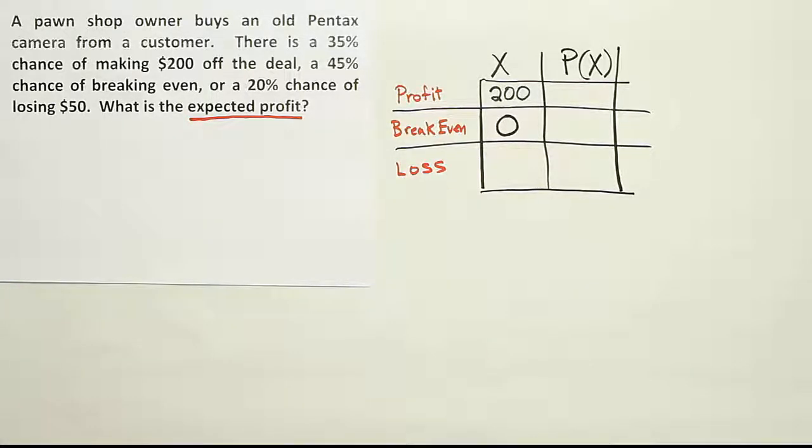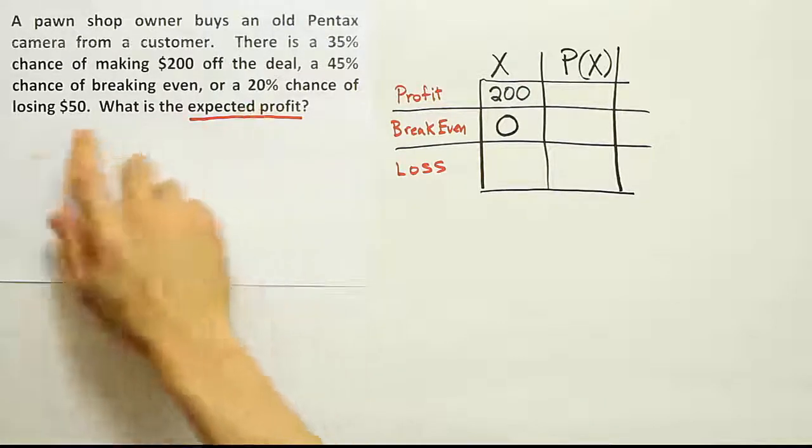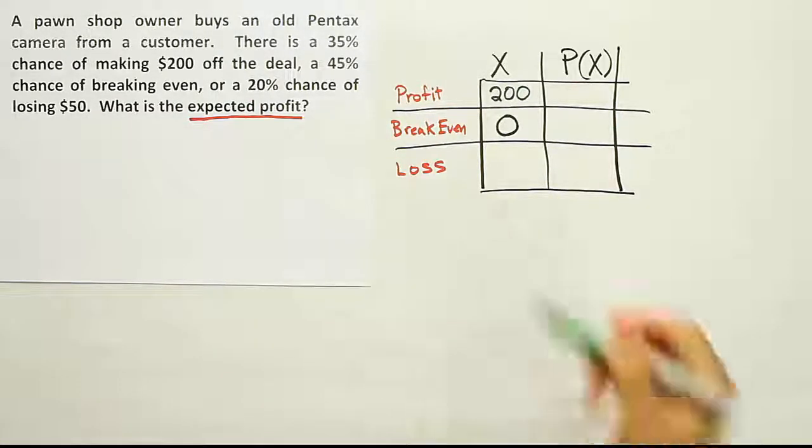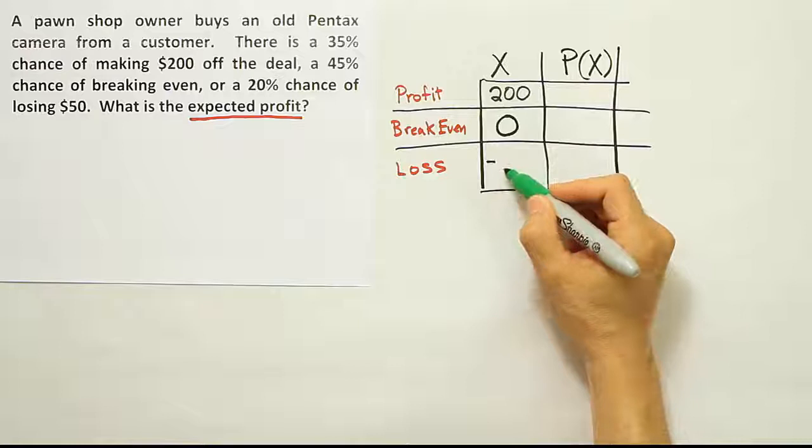And then finding the loss scenario. It says there's a 20% chance of losing 50 bucks. So if he should make a loss, he's going to be out minus $50.